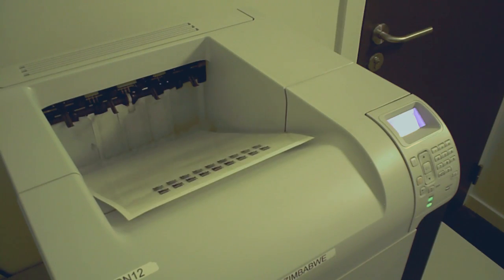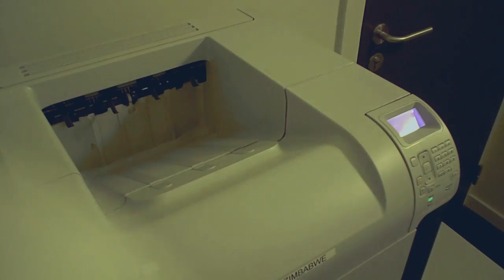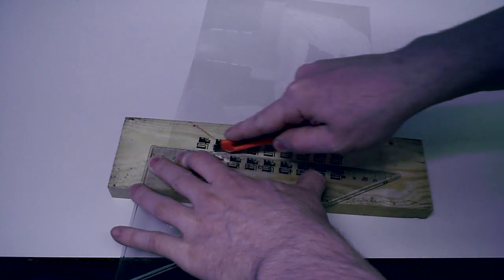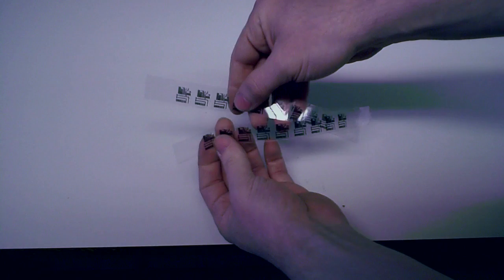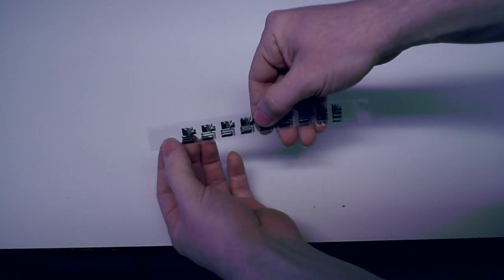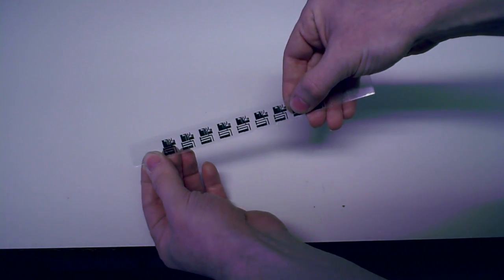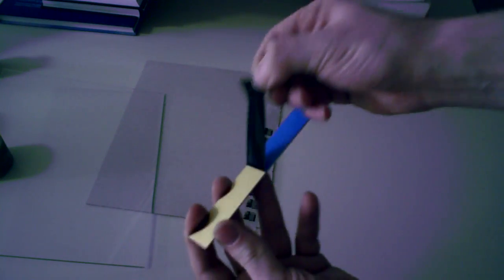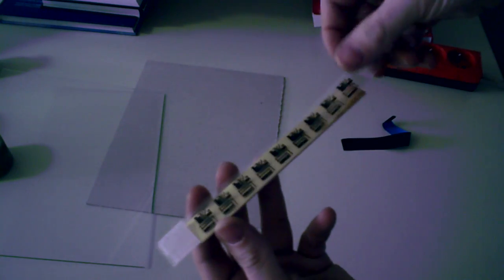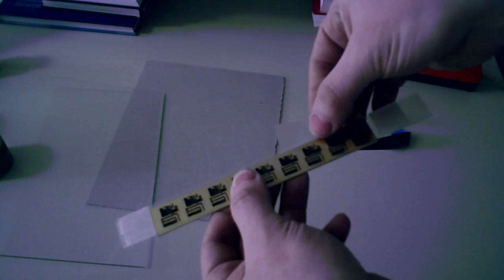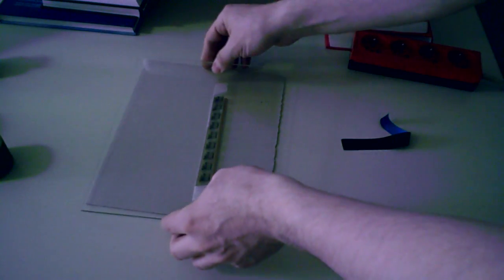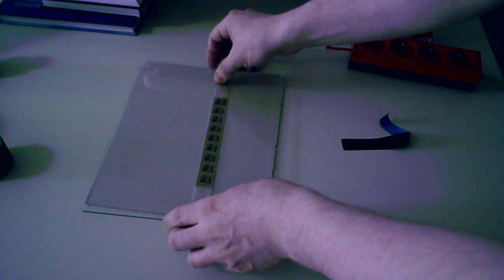To do that, I print a number of identical PCB layouts in a transparency, using a laser printer. The layouts are printed double, and after cutting them out, I align them to create a darker pattern, which will better prevent the UV light from passing through. The transparencies are secured with a piece of tape, and placed on a photosensitized PCB. Using another piece of tape, I secure the transparencies to the PCB. A piece of glass and some weights are then placed on top of the PCB, for a better contact, and we're ready for the test.